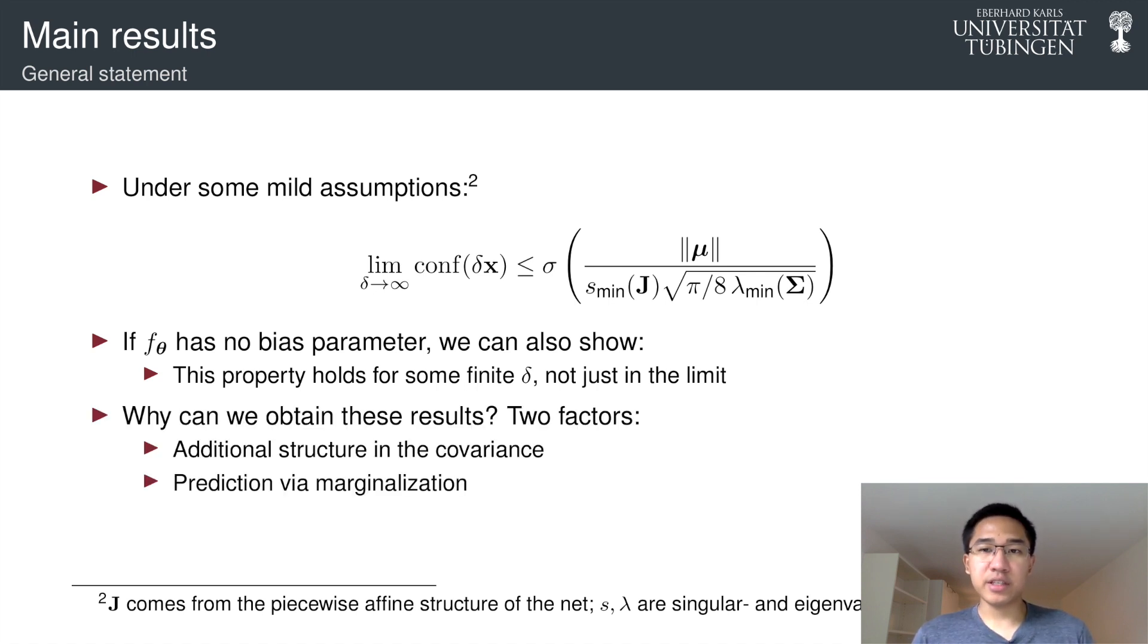So the key ingredient here, why we can obtain this result is twofold. First, we have an additional structure in the form of covariance Σ instead of just a single point estimate μ.